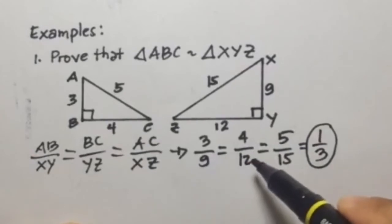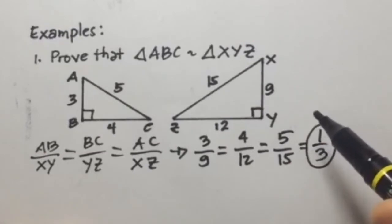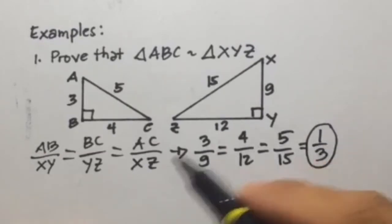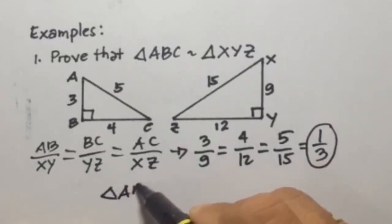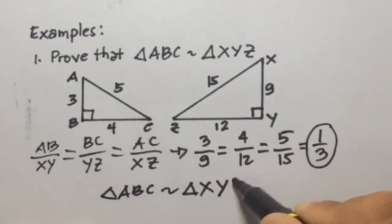Now since these three corresponding sides equal 1 third, meaning they are proportional, we can say that triangle ABC is similar to triangle XYZ. So this is using the SSS similarity theorem.